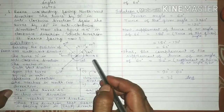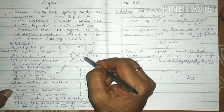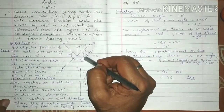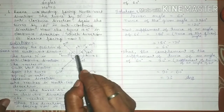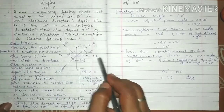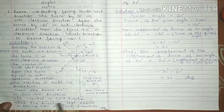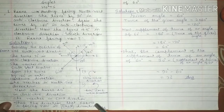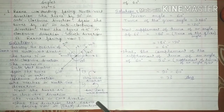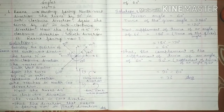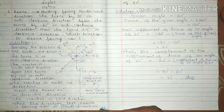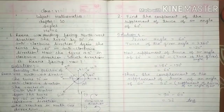Now she turns 45 degrees in clockwise direction and she reaches east direction. Thus, the direction that Rina is facing now is east direction. This is the answer of question number 1.